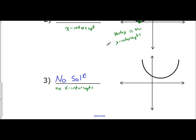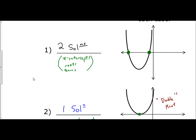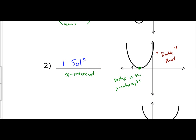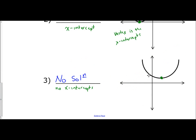We see that our lowest point — our vertex — is nowhere near the x-axis, nowhere near a solution. So to summarize the three possible outcomes of solving a quadratic equation: we can have two solutions, meaning two x-intercepts; we can have one solution, meaning one x-intercept which happens to be the vertex; or no solutions, where the graph never crosses the x-axis and there are no x-intercepts.